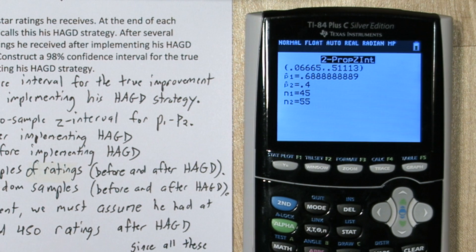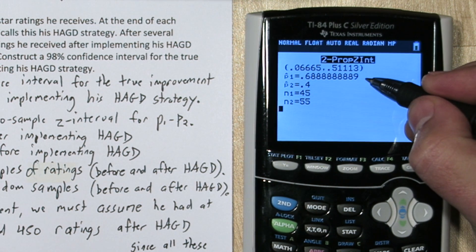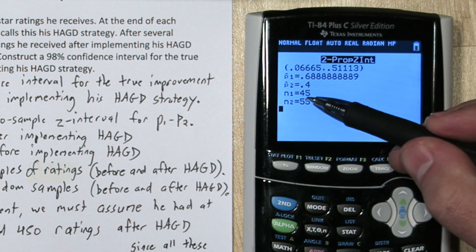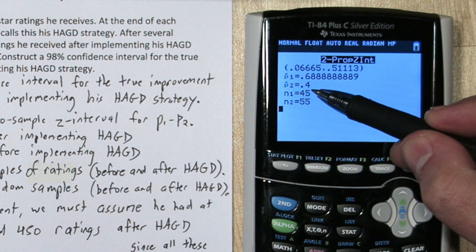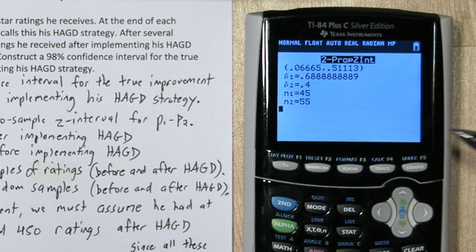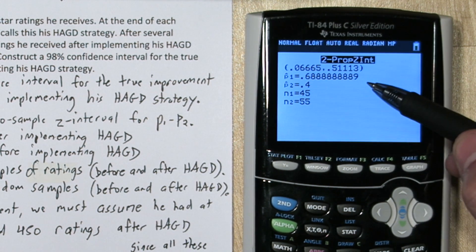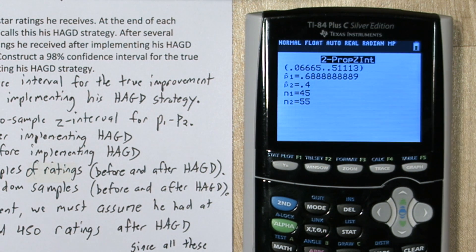We can see that the output gives us our p hat for our post have a great day strategy and for our pre have a great day strategy samples. Here's our two sample sizes. And on top is our confidence interval that estimates the difference between population proportion one and population proportion two. That is the true improvement in his 5 star rating proportion after implementing the have a great day strategy.